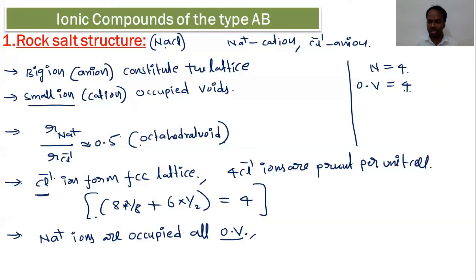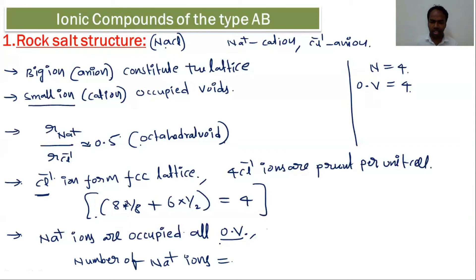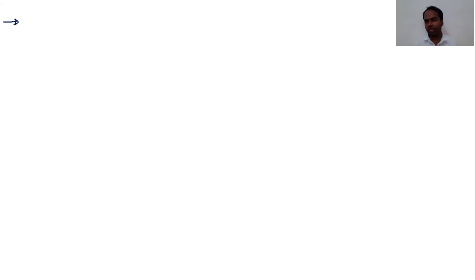Na⁺ ions are present in all octahedral voids, which are at each edge center and the center of the body. Each edge center atom contributes 1/4 to one unit cell. With 12 edges: 12 × (1/4) = 3, plus 1 Na⁺ at the body center, giving a total of four Na⁺ ions. Na⁺ is in an octahedral void, meaning it is surrounded by six neighboring anions.